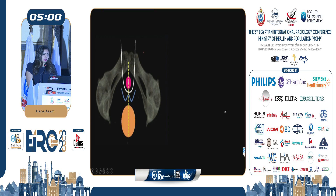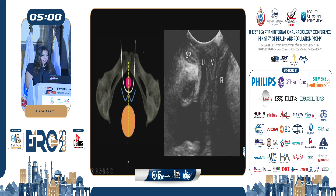The ultrasound beam passes through the pubic bone, then the urethra, vagina, and rectum, and we can see this in the mid-sagittal view. The echogenic structure seen here is the symphysis pubis, followed by the urethra and urinary bladder, the vagina, and the anal canal and rectum. Posteriorly, these are the fibers of the levator ani muscle.